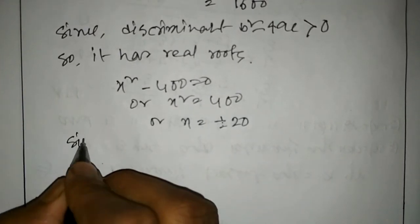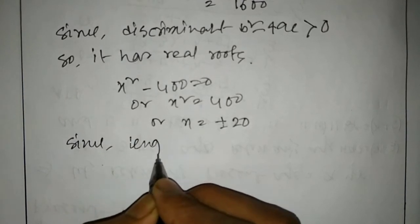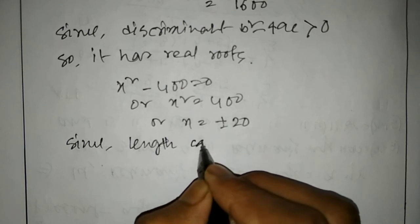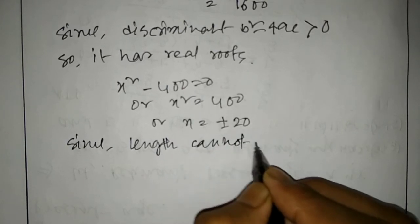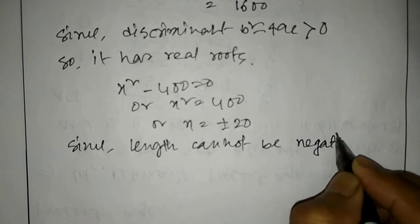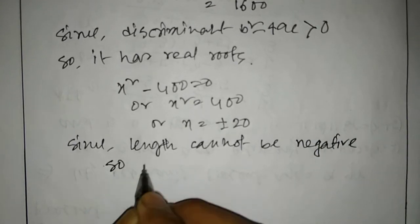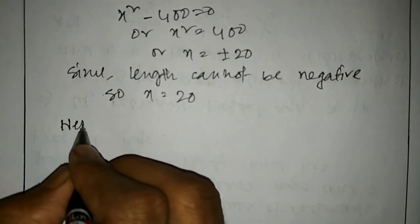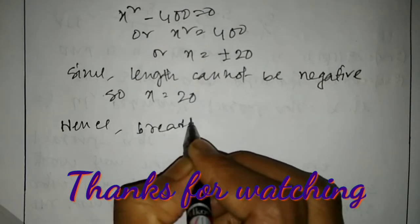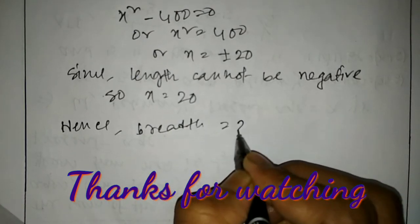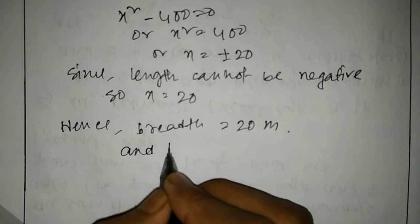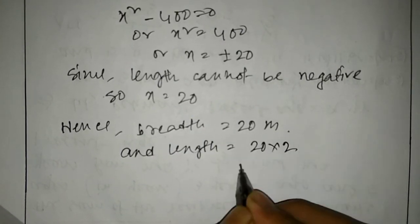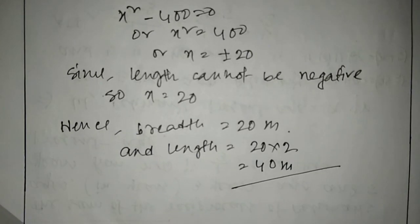From x squared minus 400 equals 0, x squared equals 400, so x equals plus or minus 20. Since length cannot be negative, x equals 20. Hence breadth equals 20 meters and length equals 2 times 20 equals 40 meters. Thank you.